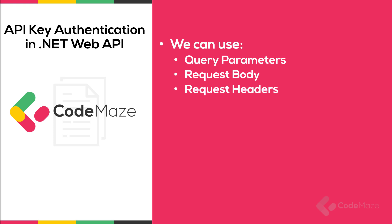We already have a video that covers all the different ways you can use to pass parameters to Web API actions, and in that video I covered these mentioned ways. So be sure to check that video out — you will find the link in the description below. In this video, I will only use the headers option to pass the API key to the Web API.